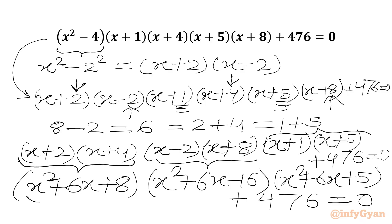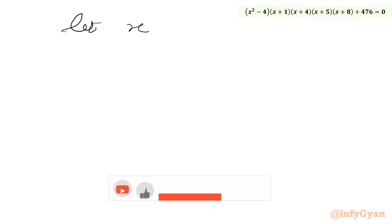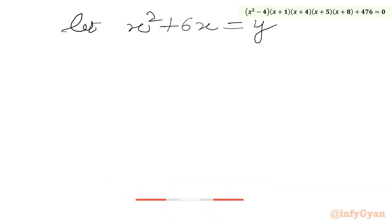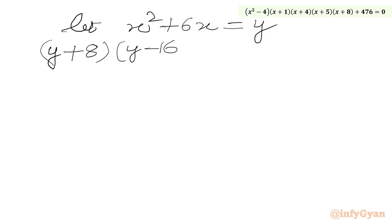Now you can see that x² + 6x appears in all three products. So it is better to substitute: let y = x² + 6x. Then our equation becomes (y + 8)(y - 16)(y + 5) + 476 = 0.